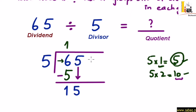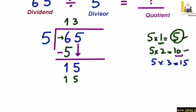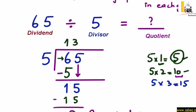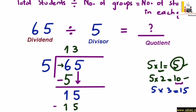ऊपर वाले step में हमने एक digit को divide किया, अब हम दो digits को divide करेंगे यानि 15 को। तो 5 के टेबल में देखते हैं कि 15 आता है: 5×1=5, 5×2=10, 5×3=15। 15 आ गया। तो 15 में से 15 को minus करेंगे तो 0 आ जाएगा। और 0 है remainder। जब remainder 0 आ जाता है तो division complete हो जाती है। quotient यानि जवाब है 13। इसका मतलब है 65 को जब 5 से divide करेंगे, तो जवाब आएगा 13।